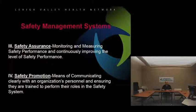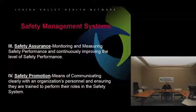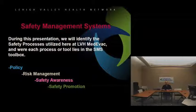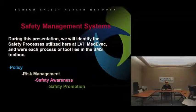The third pillar is safety assurance — monitoring and measuring your safety performance, almost like a QA process — and continuously improving the level of safety performance, which goes hand-in-hand with quality assurance and quality improvement. The fourth pillar is safety promotion: communicating clearly to the organization's personnel and ensuring they are trained to perform their roles in the safety system. We'll look at how all our tools fit into policy, risk management, safety awareness, and safety promotion.